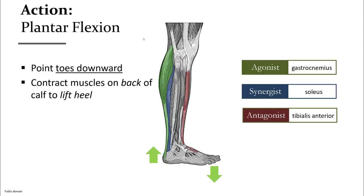An example of these terms can be applied to plantar flexion — where you stand on your tiptoes. You have two large muscles that make up your calf on the back of your leg with similar actions. In the standing position with the knee straight, the green muscle, gastrocnemius, is the agonist or prime mover, while the blue muscle, the soleus, is the synergist, as both help pull the heel up and point the toes downward. The muscle in red on the front of the lower leg would lift the toes, so it would be the antagonist.